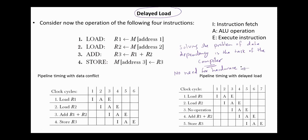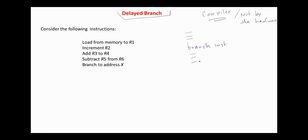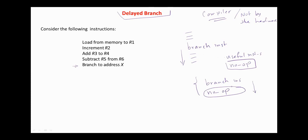Next, delayed branch — again performed by the compiler, not by hardware. The compiler detects the branch instruction and rearranges the code segment by inserting useful instructions that keep the pipeline operating without interruptions. If the compiler encounters a branch instruction, NOP instructions can be inserted to maintain a continuous flow of the pipeline.